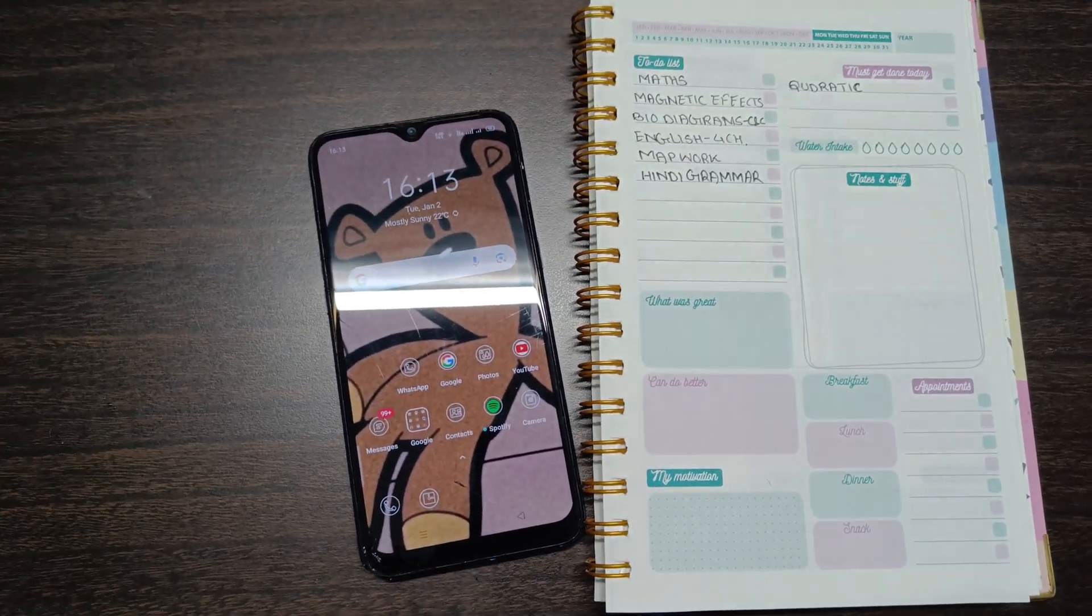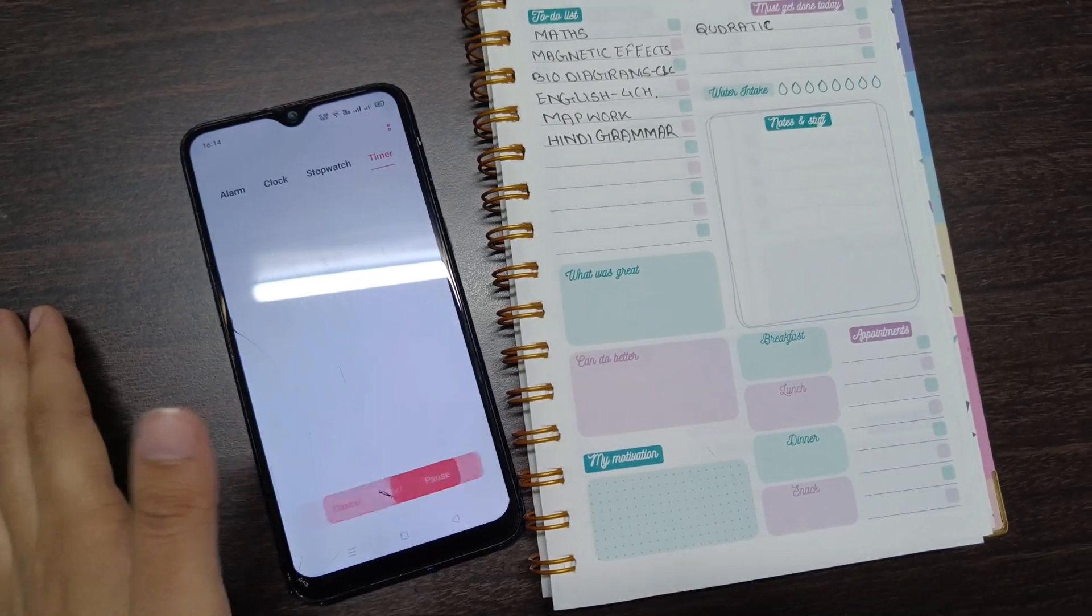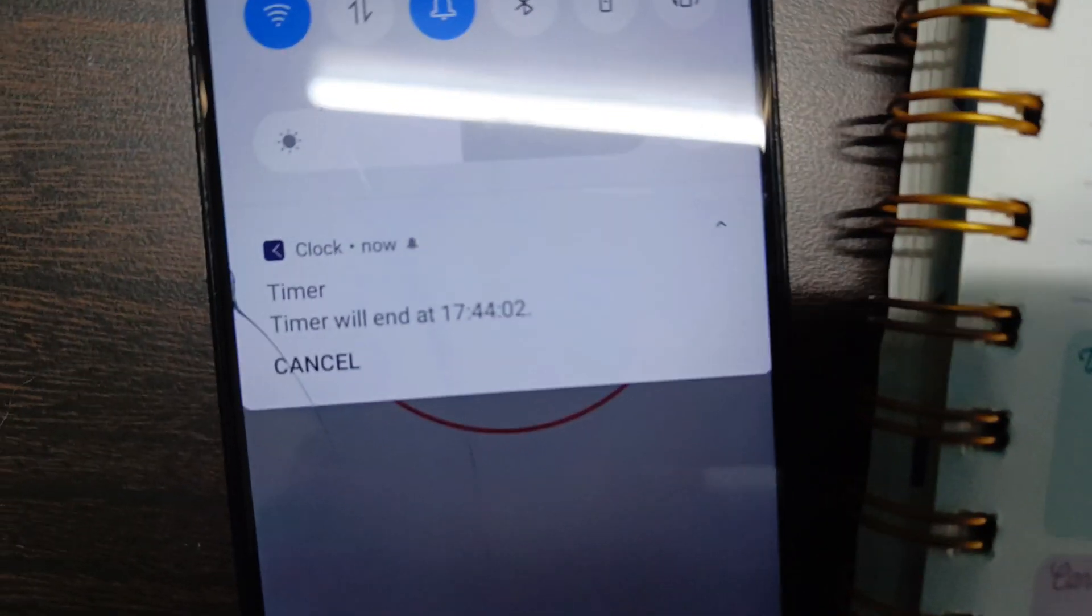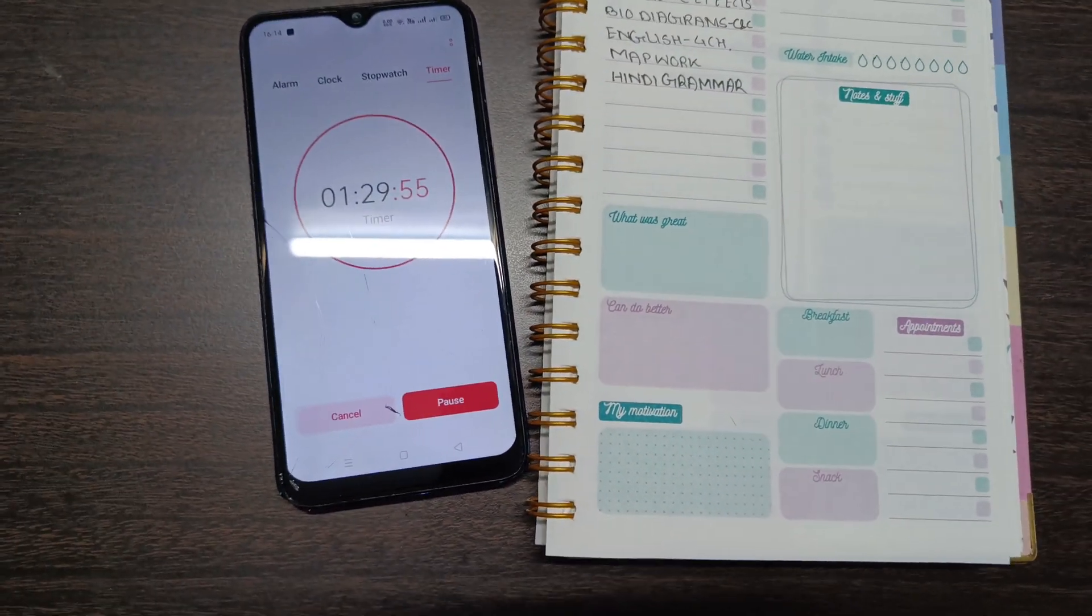So this is going to be an interesting video. Let's place a timer of 1 hour 30 minutes now. This timer will end at 5:44 PM. So yeah, let's start practicing maths now.